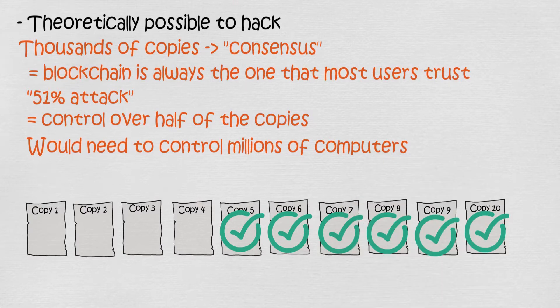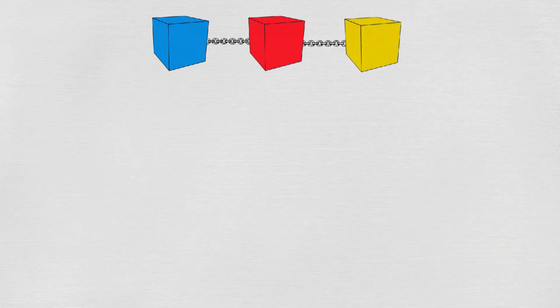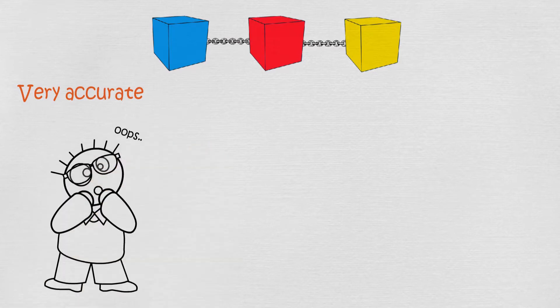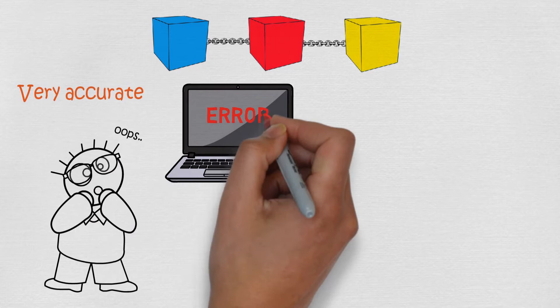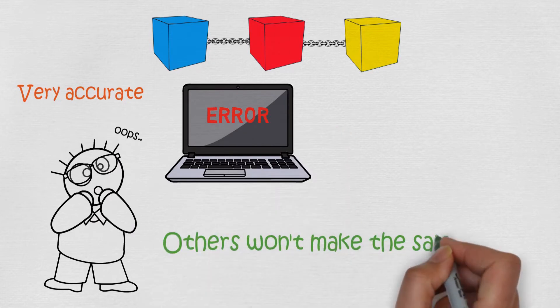With bitcoin for example, you would need to control millions of computers. Because you would need to control 51% of the copies to change the blockchain, it also makes the blockchain very accurate. There is pretty much no human involvement in the process, so if somebody does a human error or if somebody's computer manages to make a mistake, it won't affect the blockchain because other computers won't make the same mistake.